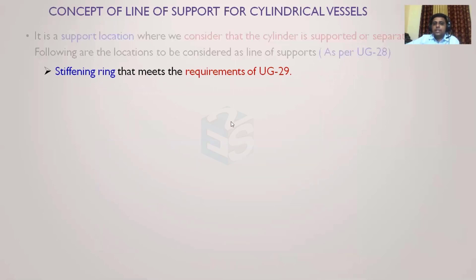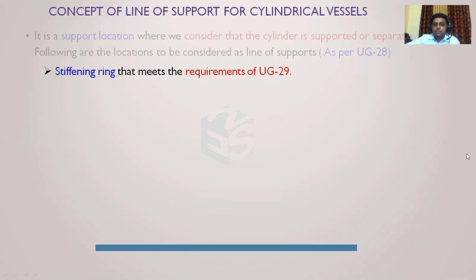The second line of support is the stiffener ring, which must satisfy the requirements of UG-29. UG-29 gives the moment of inertia requirement: we calculate the required moment of inertia and check the available moment of inertia. If the available moment of inertia is not sufficient, we must add a stiffener ring whose moment of inertia exceeds the required value. Only if the stiffener ring satisfies this moment of inertia requirement can it be considered a line of support.